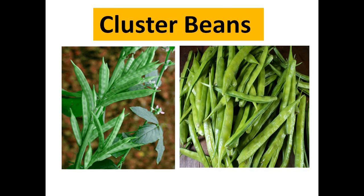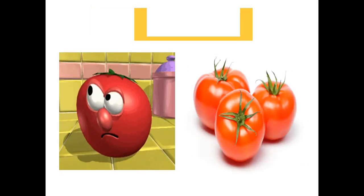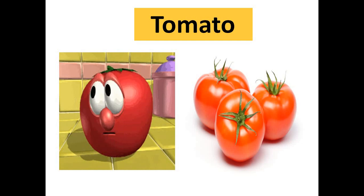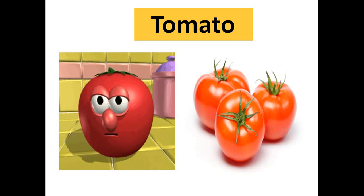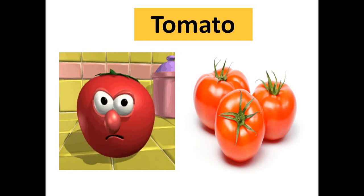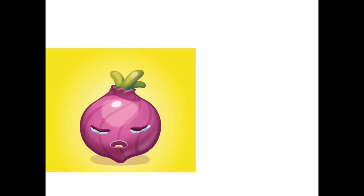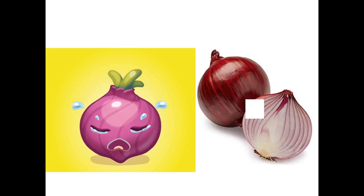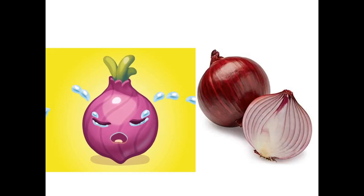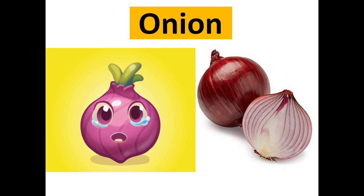Cluster beans. Next is tomato — tomato ko English mein kehte hain 'tomato.' Now next is pyaaj ya kanda, jise hum English mein kehte hain 'onion.'